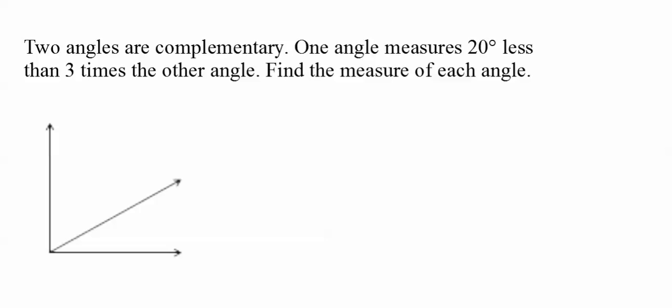Two angles are complementary. One angle measures 20 degrees less than 3 times the other angle. Find the measure of each angle. So the idea is you have to know what complementary means. I tell people complementary means that it's the right thing to do. So complementary means that the two angles added up together is going to be 90. That makes the right angle.